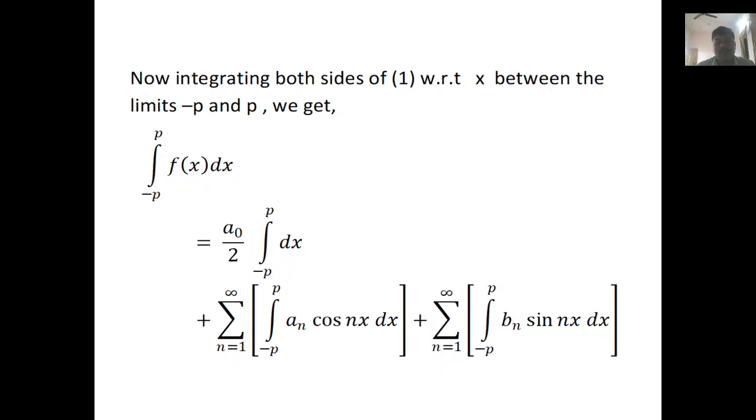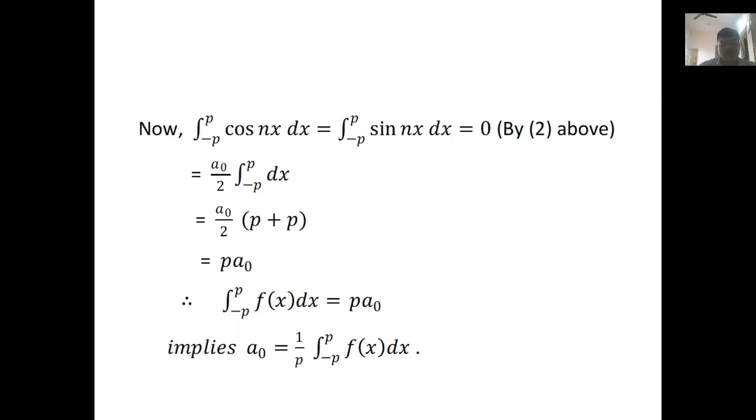Now integrate both sides of equation 1 with respect to x between the limits minus P to P. The integration of cos(nx)dx and sin(nx)dx from minus P to P equals 0 by using condition 2. We get a₀/2 times the integration of dx from minus P to P. After integration, finally a₀ = 1/P ∫₋ₚᵖ f(x)dx.